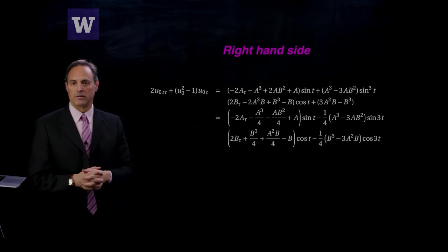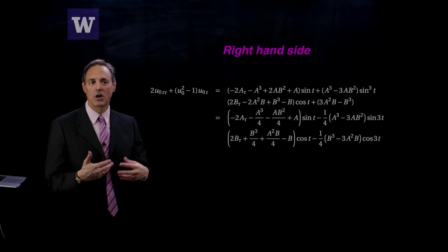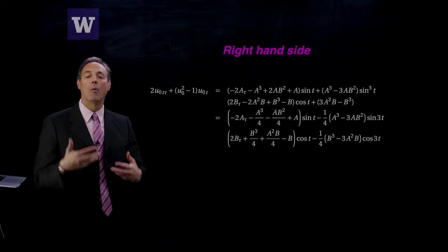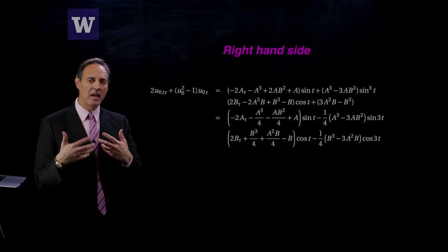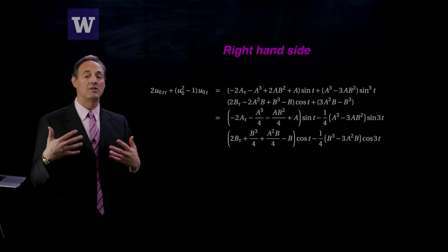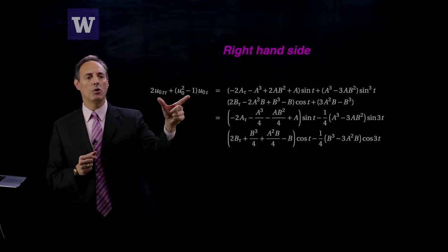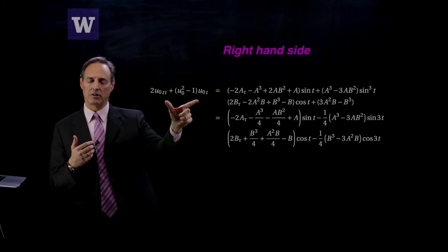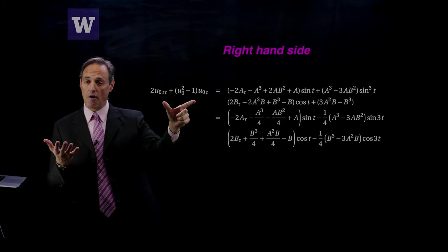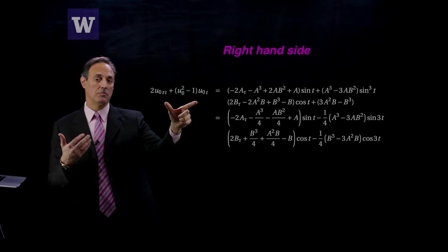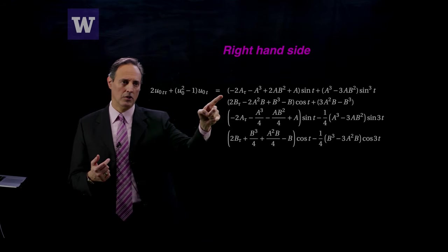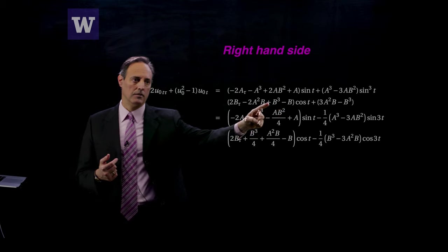Let's go to the next order. This is where all the action happens because we want to impose the solvability conditions, which will give us information about what has to happen with a and b in the slow evolution, so that solvability is satisfied. Here is the right-hand side forcing function. I just solved for u0, which was a cos t plus b sin t, where a and b are functions of tau. Plug in that solution and you get all this here.